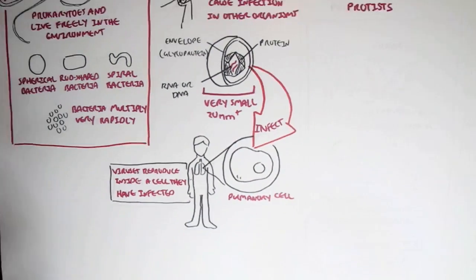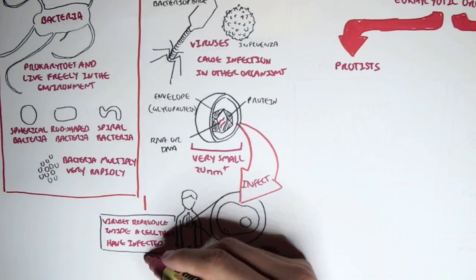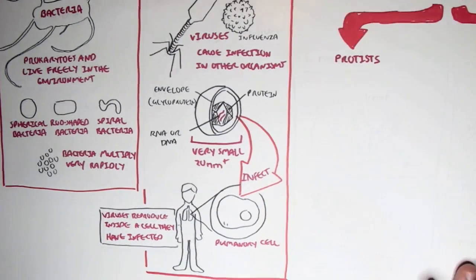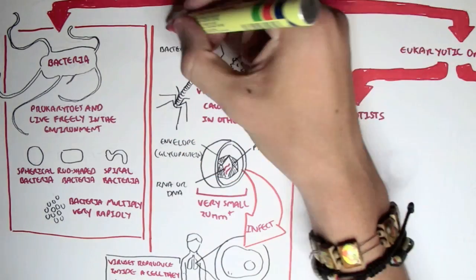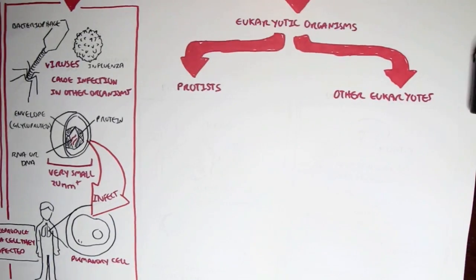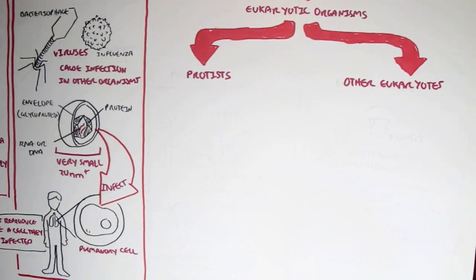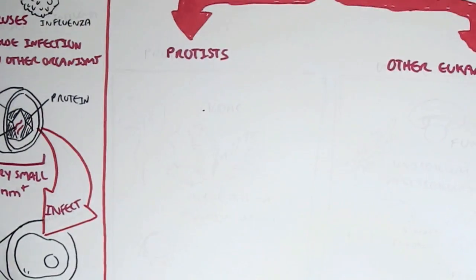And that was all for viruses. Let's look at the eukaryotic organisms. Now they consist of protists and other eukaryotes. Let's concentrate on protists first. And there are two types of protists' family that I'm going to talk about. One of these microorganisms are known as algae.